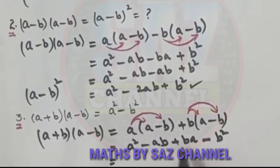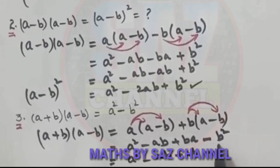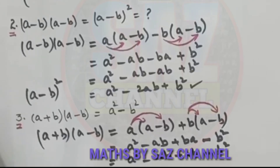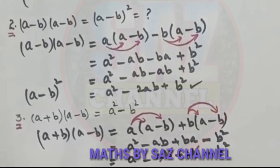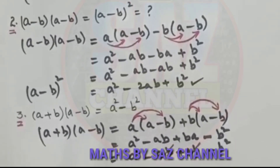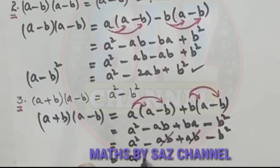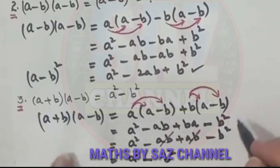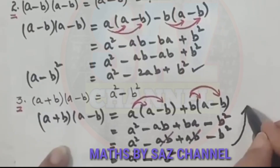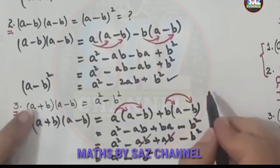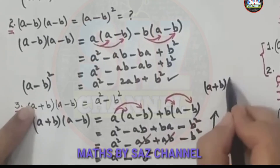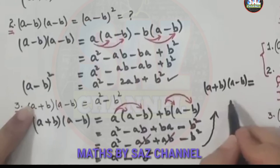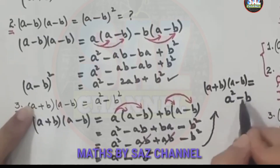Now, -ab and +ba are like terms with opposite signs — we can cancel them. After cancellation, we are left with only a² - b². So whenever we use the product (a + b)(a - b), we are not going to multiply them out; we will use the identity directly.